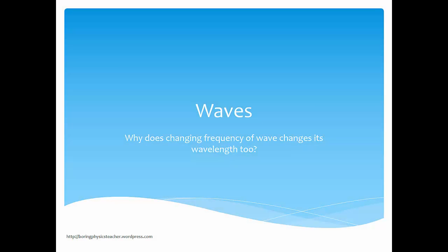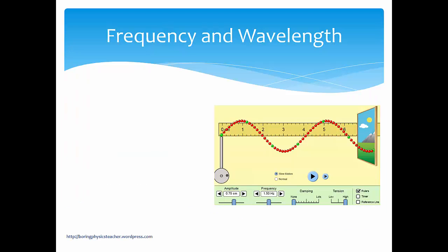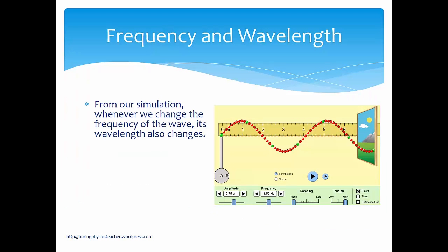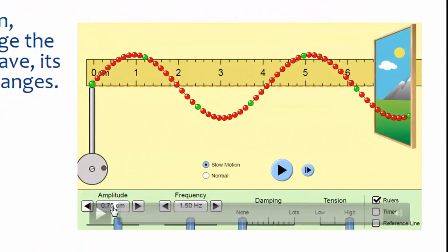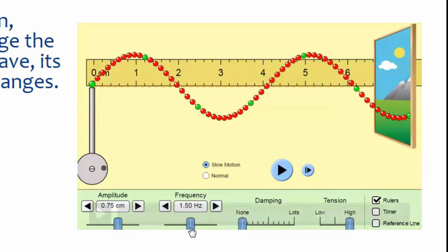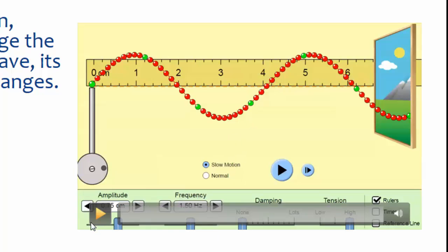In this lesson, we're going to learn about the concept of why changing the frequency of a wave also changes its wavelength. From our simulation, whenever we change the frequency of the wave, the wavelength also changes. The current frequency is 1.5 Hz, and you'll find that the wavelength is roughly about 4.